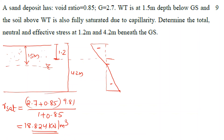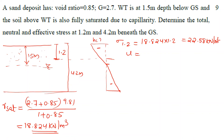We consider the point at 1.2 meters depth. Sigma equals gamma_sat into 1.2, which is 22.58 kN/m². For pore pressure U: U equals gamma_w into h, where h is the distance from the water table. The capillary height is 1.5 meters, the point is at 1.2 meters, so the distance from the water table is 0.3 meters. Pore pressure equals 9.81 into 0.3, which is 2.943 kN/m².